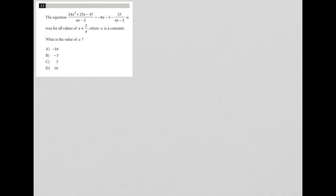This question says the equation 24x squared plus 25x minus 47 divided by ax minus 2 is equal to negative 8x minus 3 minus 53 over ax minus 2, true for all values of x not equal to a, where a is a constant. What is the value of a?